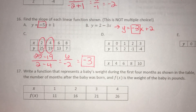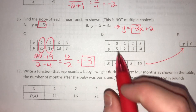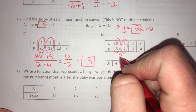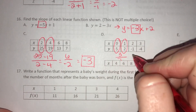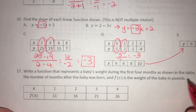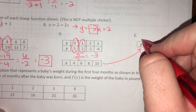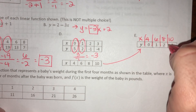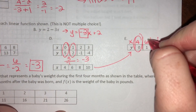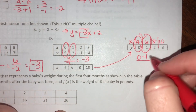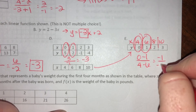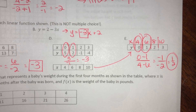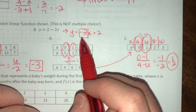For (d), using the first two ordered pairs: y minus y over x minus x is 5 minus 2 over 0 minus 1 equals 3 over negative 1, which is negative 3. For the last table, using the first two points: 0 minus 1 over 4 minus 6 equals negative 1 over negative 2, which is positive one half. So the slope formula is y minus y over x minus x, or in slope-intercept form, the slope is the number in front of x.